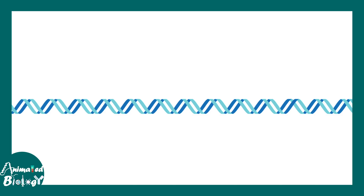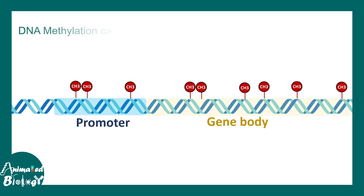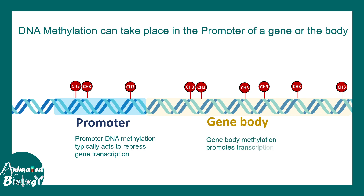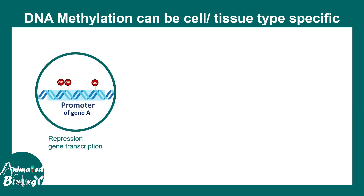Inside a gene there could be different regions which could be methylated, like the promoter or the gene body, but the consequence of methylation in these two different regions is different. Generally, promoter methylation is associated with gene inactivation or repression of transcription, whereas in many cases gene body methylation promotes transcription. To understand how methylation in two different regions produces two different outcomes, we need to look more closely.